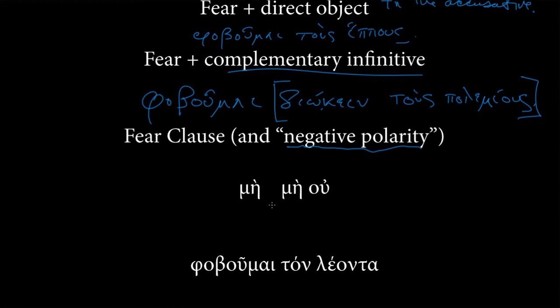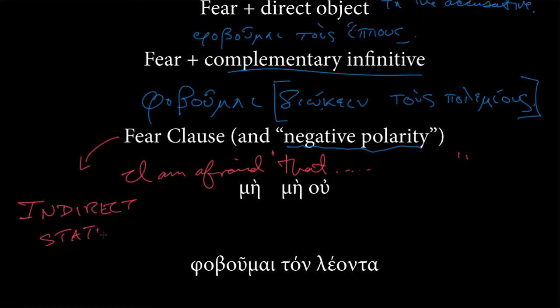We just have an infinitive phrase, just as we do in English. I am afraid to do this thing. I'm afraid to pursue the enemy. So then we have, however, this idea of a fear clause. I'm afraid that. That is what we're getting to here. I'm afraid that. So this is something akin, then, to an indirect statement.